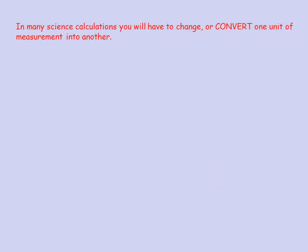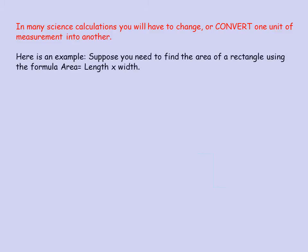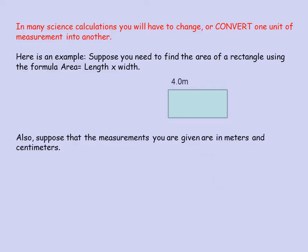In many science calculations you have to change or convert from one unit of measurement to another. Here's an example: let's suppose that you need to find the area of a rectangle using the formula area equals length times width. Also, let's suppose that the measurements you're given are 4 meters and 200 centimeters for length and width.